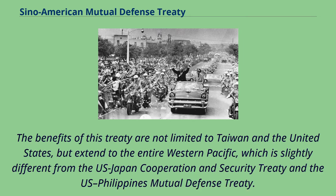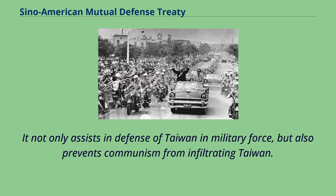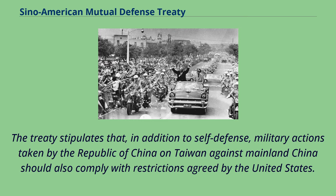The benefits of this treaty are not limited to Taiwan and the United States, but extend to the entire Western Pacific, which is slightly different from the U.S.-Japan Cooperation and Security Treaty and the U.S.-Philippines Mutual Defense Treaty. The basic spirit of this treaty is anti-communist — it not only assists in the defense of Taiwan by military force, but also prevents communism from infiltrating Taiwan. The treaty stipulates that, in addition to self-defense, military actions taken by the Republic of China on Taiwan against mainland China must also comply with restrictions agreed by the United States.